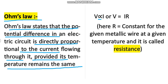The potential difference V is directly proportional to current I. Now, if you have to remove this proportionality, we need to introduce a constant. That constant is known as resistance and represented by R (capital R). So V equals IR.